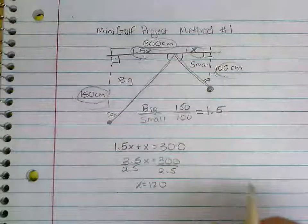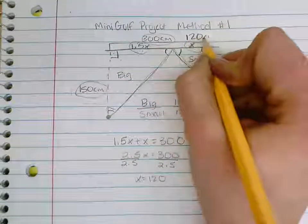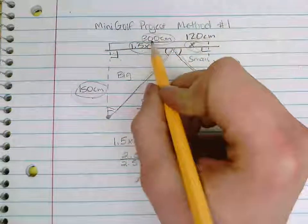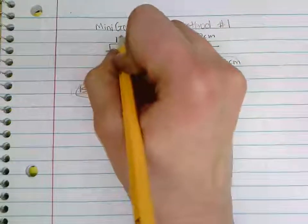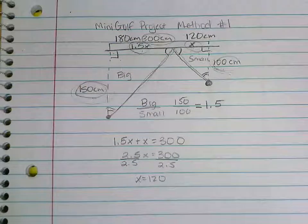So that means right now that this small triangle, this measurement has to be 120 centimeters. And if there's 300 centimeters total, that means that this side would need to be 180 centimeters.